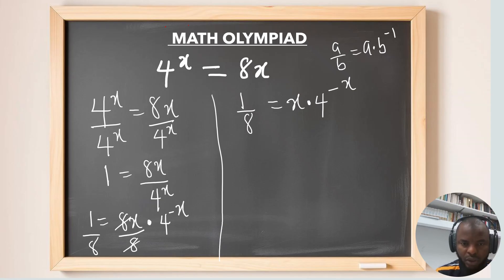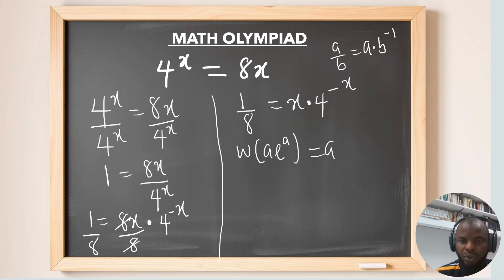From here I'm going to use a function known as the Lambert W function. The Lambert W function is of the form W(a · e^a) equals a.